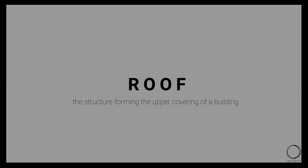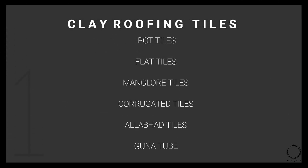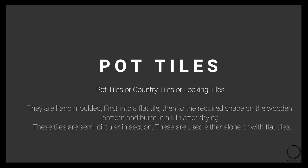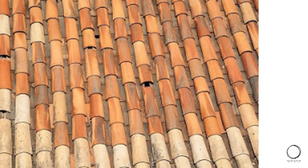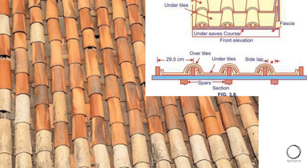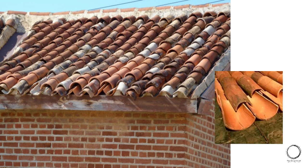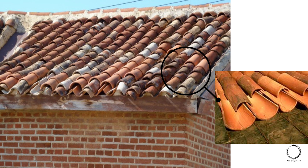Another important term is roof — the structure forming the upper covering of a building. The first type is clay roofing tiles, with subdivisions including pot tiles, flat tiles, mangler tiles, corrugated tiles, alabadi tiles, and guna tube. Pot tiles, also known as country tiles or locking tiles, are hand-molded into a flat tile then shaped on a wooden pattern and burned. They are semi-circular in section and can be used alone or with flat tiles — laid concave side up, then covered with convex tiles over the adjoining edges.